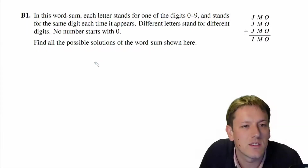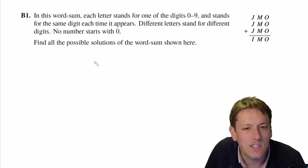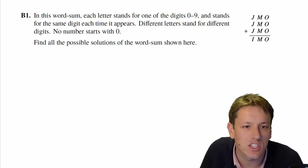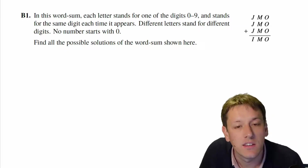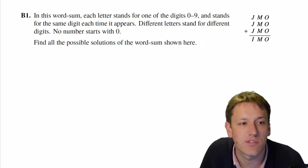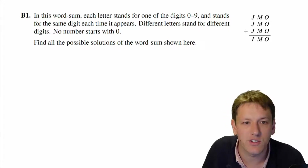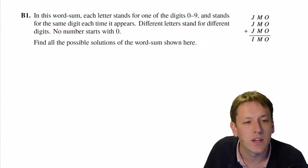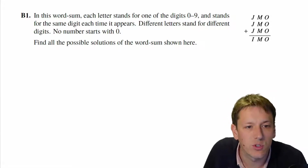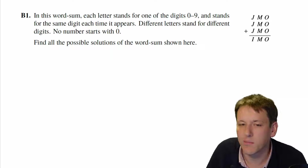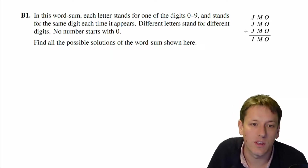In this word sum, each letter stands for one of the digits 0 to 9 and stands for the same digit each time it appears. Different letters stand for different digits and no number starts with a 0, so we can't have J being 0. We want to find all the possible solutions of the word sum shown here.